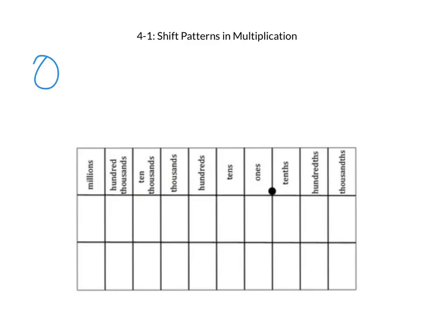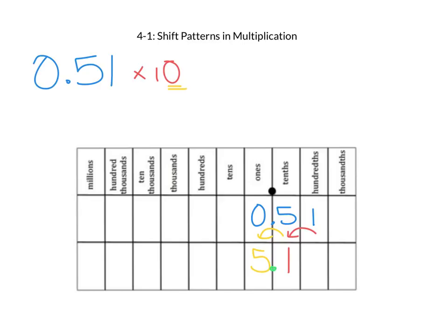The same thing works if you start with a decimal number with no whole numbers. This number says 51 hundredths. First, let's put our number into the place value chart: 51 hundredths. Multiplying this number by 10 will shift each of the digits to the left one place. So the 5 will shift one place over to the ones place, and the 1 will shift one place over to the tenths place. We keep our decimal exactly where it is, fixed in between the ones and the tenths place, for an answer of 5 and 1 tenth.